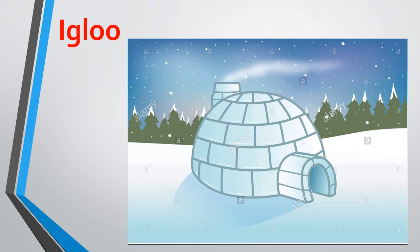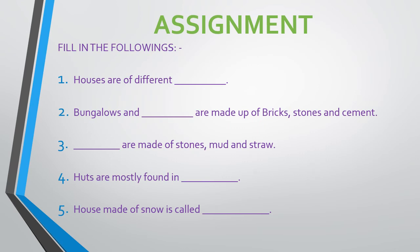Some people live in a house made of snow. It is called an igloo. An igloo is found in places where snow falls on a large scale.